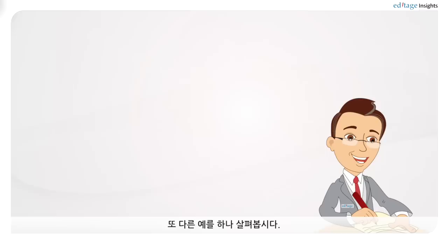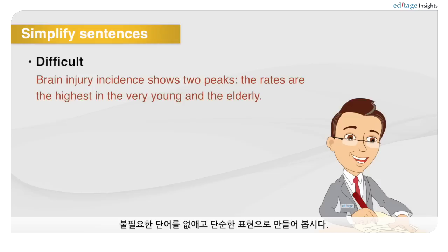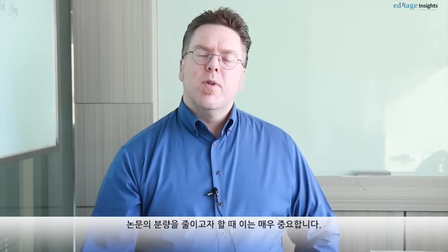To write more clearly, it's not just enough to use simpler language when possible — it's also necessary to cut unnecessary words. For example: 'Brain injury incidence shows two peaks. The rates are highest in the very young and in the elderly.' Why not write this simply as: 'Brain injury incidence peaks in the very young and the elderly.' Same meaning, but only about half the words. If you're trying to reduce your word count in a paper, this becomes very important — just say things simply and clearly to make it easier to process.